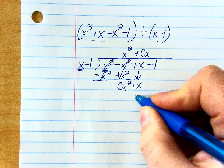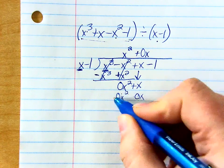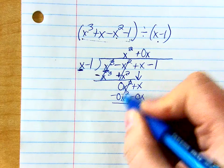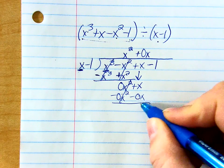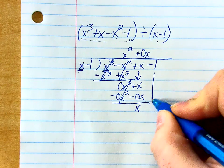It's still just 0x, right? And then 0x times x is 0x squared. I subtract them both. It doesn't really matter. But now over here, what do I get? x. Bring down the minus 1.